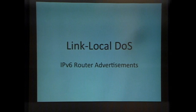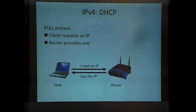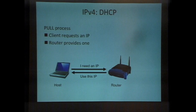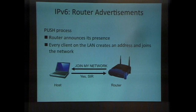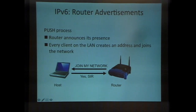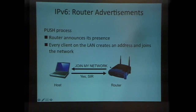In IPv4, you typically hand out addresses with DHCP — the client boots up, says it needs an IP, the server assigns one, and it won't ask again for a long time, like days. In IPv6, it's a push process instead of a pull process. The router sends out periodic router advertisements saying 'everybody better join my network because I'm the router.' Every one of those machines makes up its own IP address and joins that network. That's how IPv6 automatic addressing works.